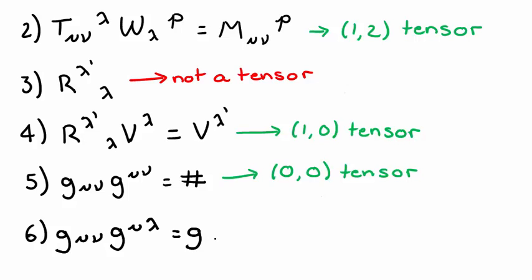Number six looks very similar to five. But just because we have two upper and two lower indices, it doesn't automatically mean they're contracted. In this case, only mu is contracted, leaving an upper index lambda and a lower index nu. So we'll call this a 1-1 tensor.